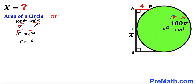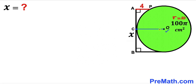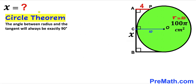The radius r of this green circle is 10 centimeters. In the next step, I've connected center O with the point of tangency C, so radius CO is 10 centimeters. Recalling the circle theorem: the angle between a radius and a tangent is always 90 degrees. Therefore angle ACO is 90 degrees, since CO is the radius and AB is the tangent line.